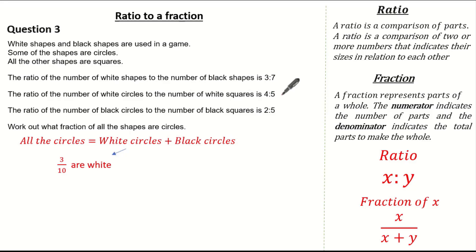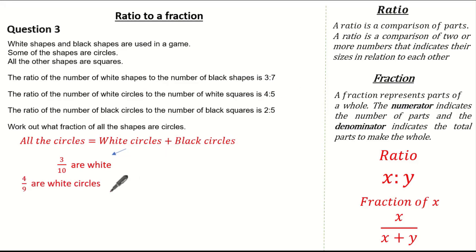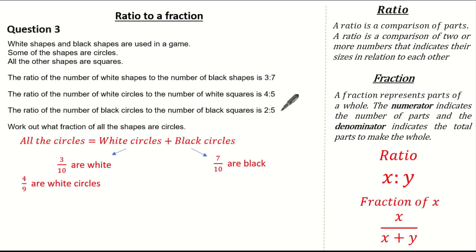The ratio of white circles to white squares is four to five, so four ninths of the white shapes are white circles. For black circles: we know seven tenths of the shapes are black, and the ratio of black circles to black squares is two to five, so two sevenths of the black shapes are black circles.